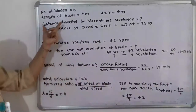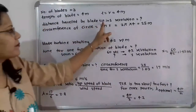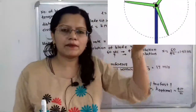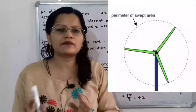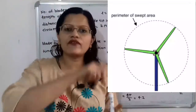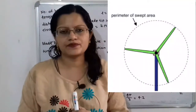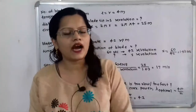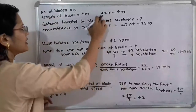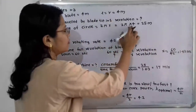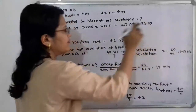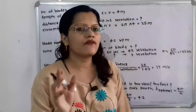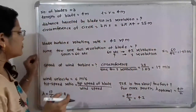For the first question — the distance traveled by the blade tip in one revolution — we calculate the circumference of the circle. Circumference equals 2πr, where r is the blade length. So circumference equals 2π × 4, which equals 25 meters. This is the distance traveled by the blade tip in one complete revolution.